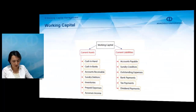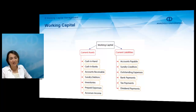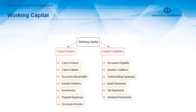We start with the definition of working capital. Working capital is the current assets of our company. We also have net working capital, which is the difference between current assets and current liabilities of a company. Current assets are assets that are expected to be converted to cash in less than a year, and current liabilities are liabilities that are to be paid in less than a year.